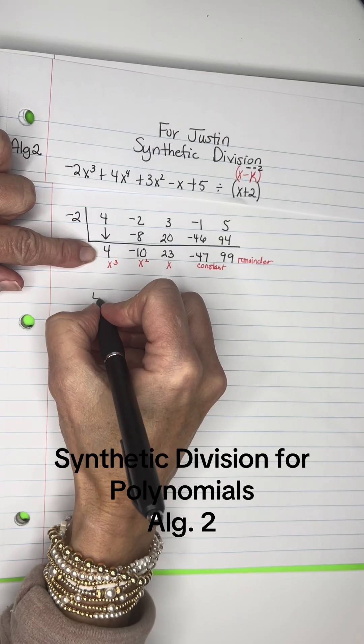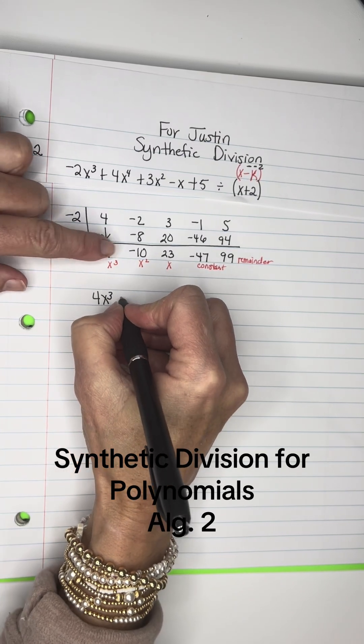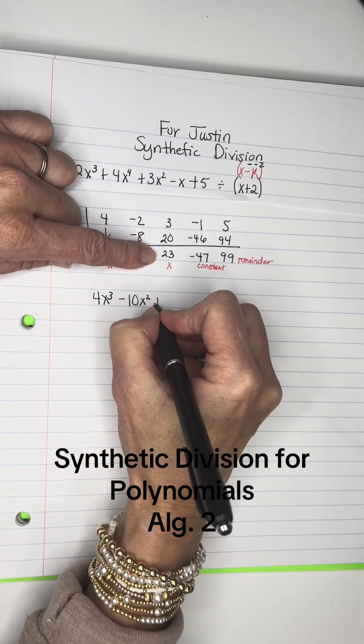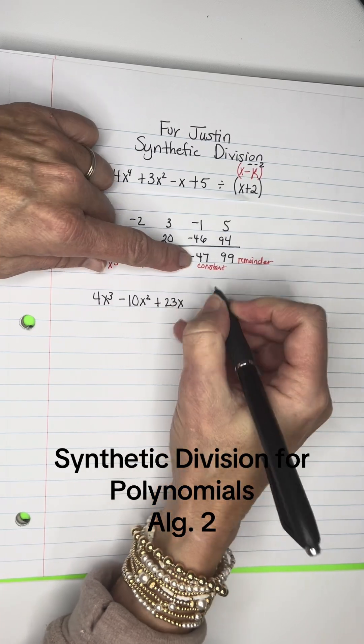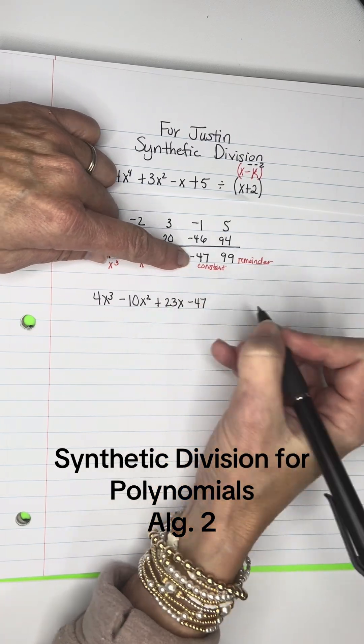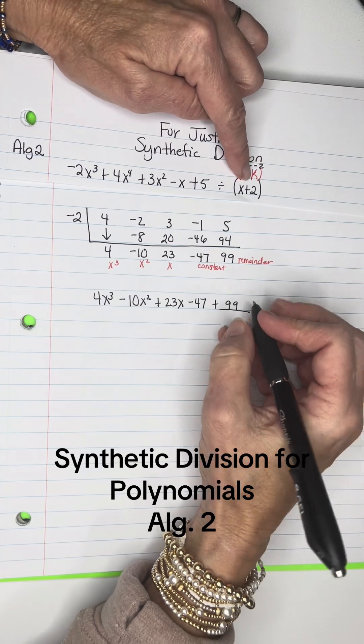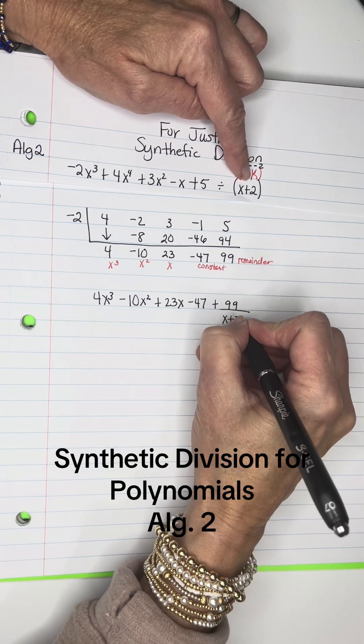So the answer is 4X cubed minus 10X squared plus 23X minus 47 plus 99, the remainder, over the divisor, X plus 2.